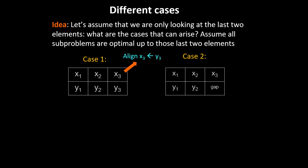Another case is that x is of greater length than y. We know the prior elements are optimal, so we're only considering the last two elements. What we do here is just remove x3, because the rest is already optimal. The goal is to transform x into y, so we make x into y by removing this extra character.